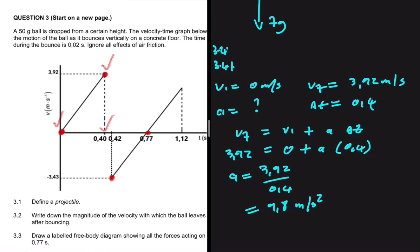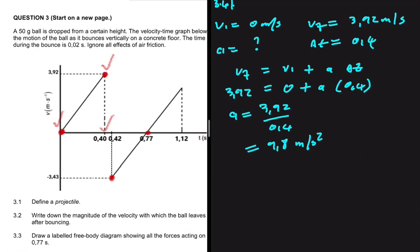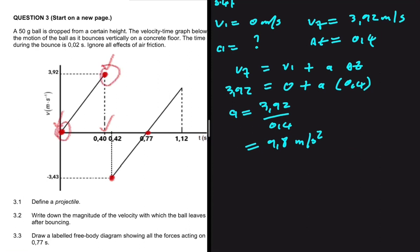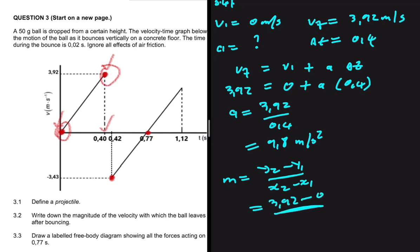Alternatively, using the gradient method, we take two points on the graph and calculate (y2 − y1) ÷ (x2 − x1): y2 = 3.92, y1 = 0, x2 = 0.4, x1 = 0. Again we get 9.8 meters per second squared — regardless of which technique we use.